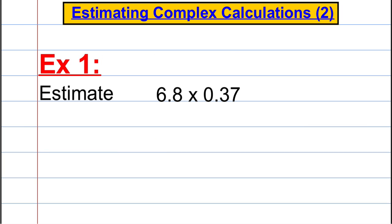So imagine we were asked this question: Estimate 6.8 multiplied by 0.37. It's the same method as estimating complex calculations video 1. We round everything to the first significant figure. The first significant figure in this case is the 6 in the ones column and the 3 in the tenths column.